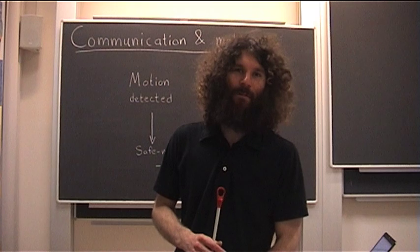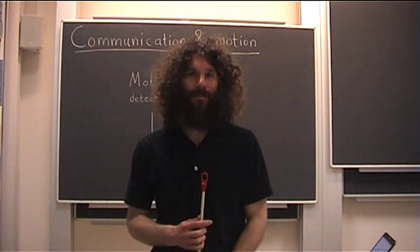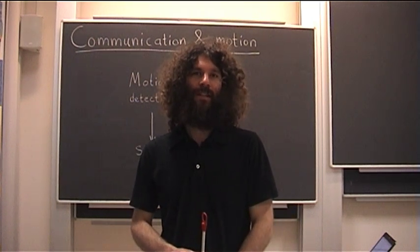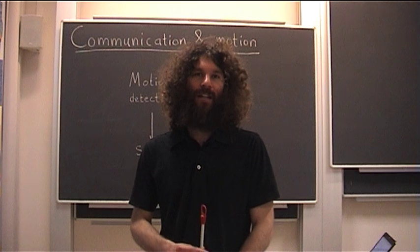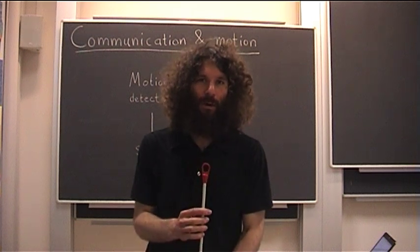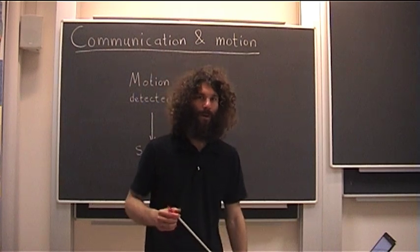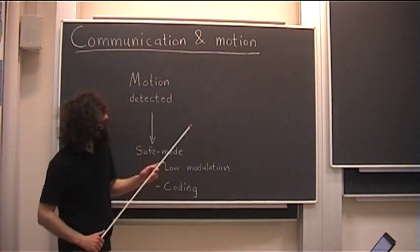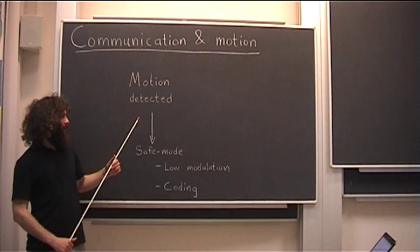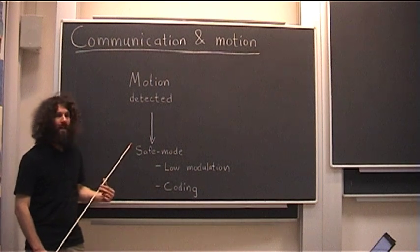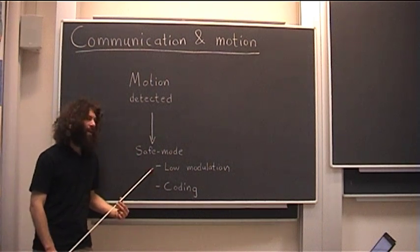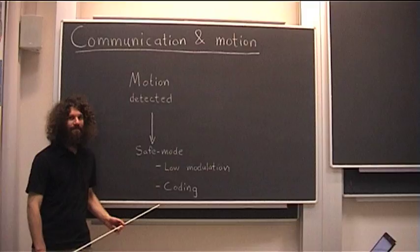Let's see what our diversity system can do with motion. A huge problem here is the subchannels—they all change a lot with very small movements. This system is designed with a fallback mode, so when motion is detected, the system enters a safe mode. This means the transmission will use low modulation with coding. I will now move the speaker during the transmission. Let's see how it goes.